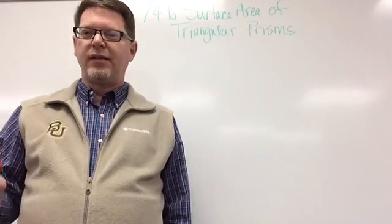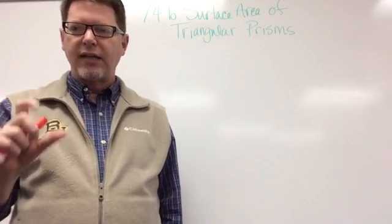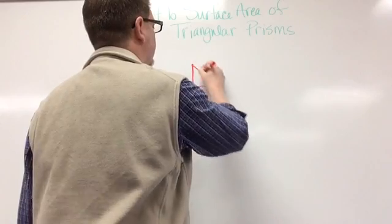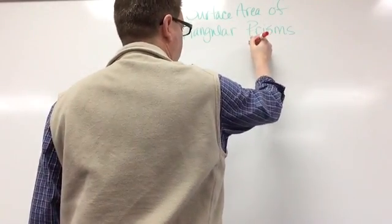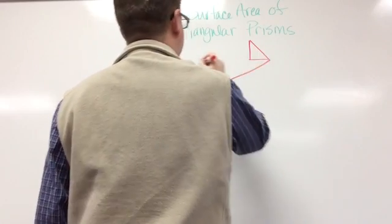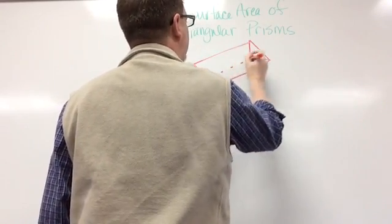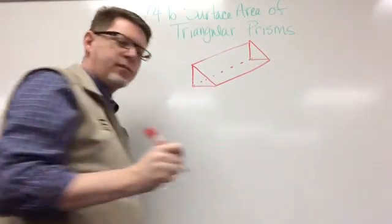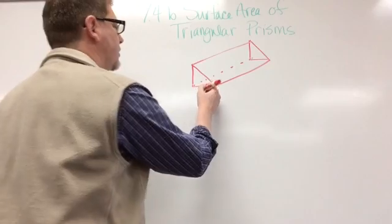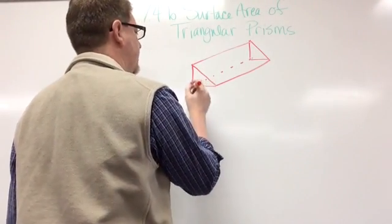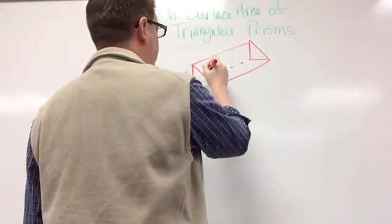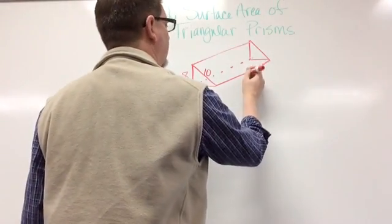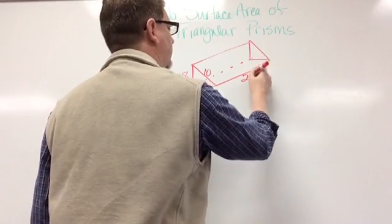So let's look at another example. This example is going to have a right triangle as the base for the triangular prism. I'm going to draw a right triangle, then another right triangle over here, and connect them. Here's the right angle. Let's label the measurements: this side is 6, this side is 8, this side is 10, and the height of the whole prism is going to be 20.